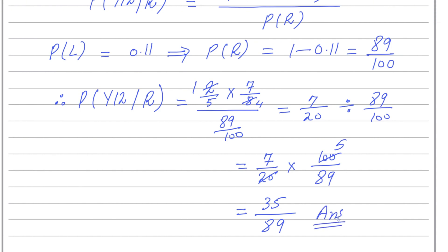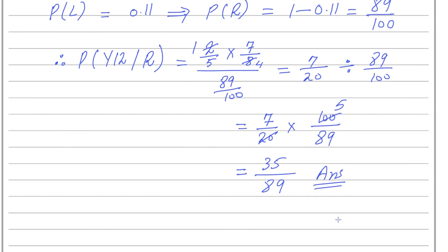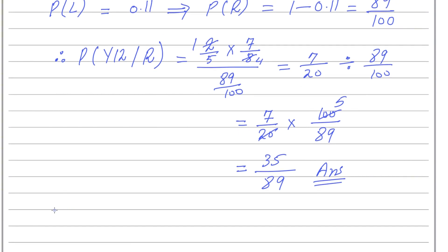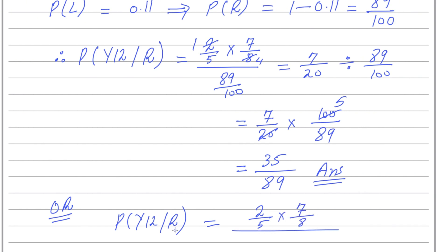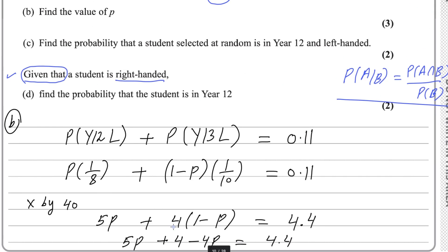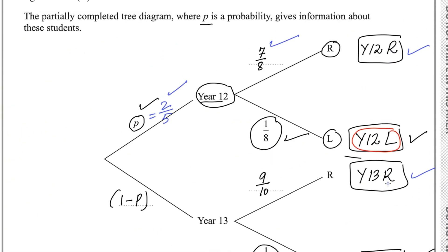For the last part there is another way of solving this. You could write: P(Year 12 | right-handed) = P(Year 12 and right-handed) ÷ P(right-handed). We already found P = 2/5, so P(Year 12 and right-handed) = 2/5 × 7/8.